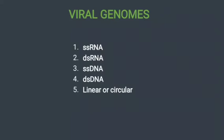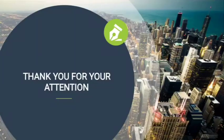Next we see viral genomes. Viral genomes include single-stranded RNA, double-stranded RNA, single-stranded DNA, and double-stranded DNA, in either linear or circular molecules. These are the main categories of genome organization.